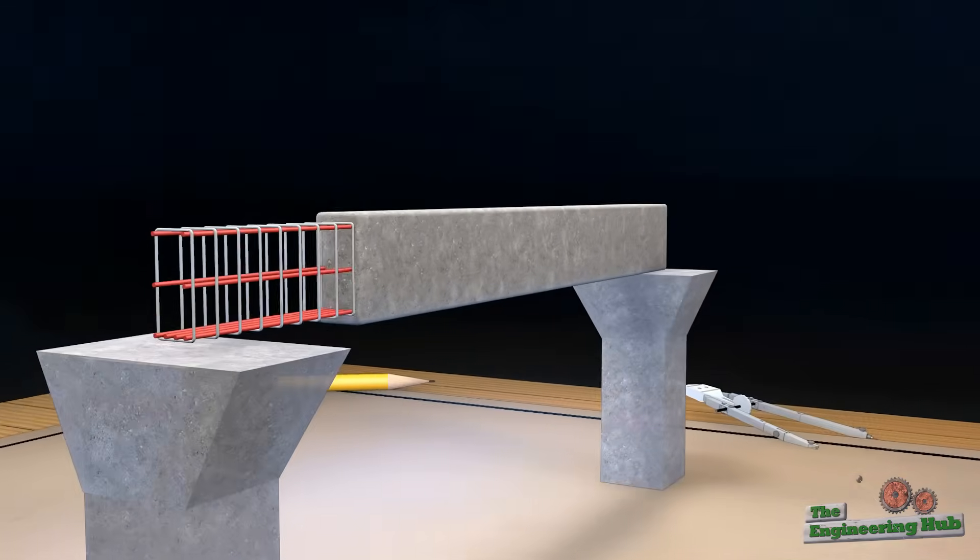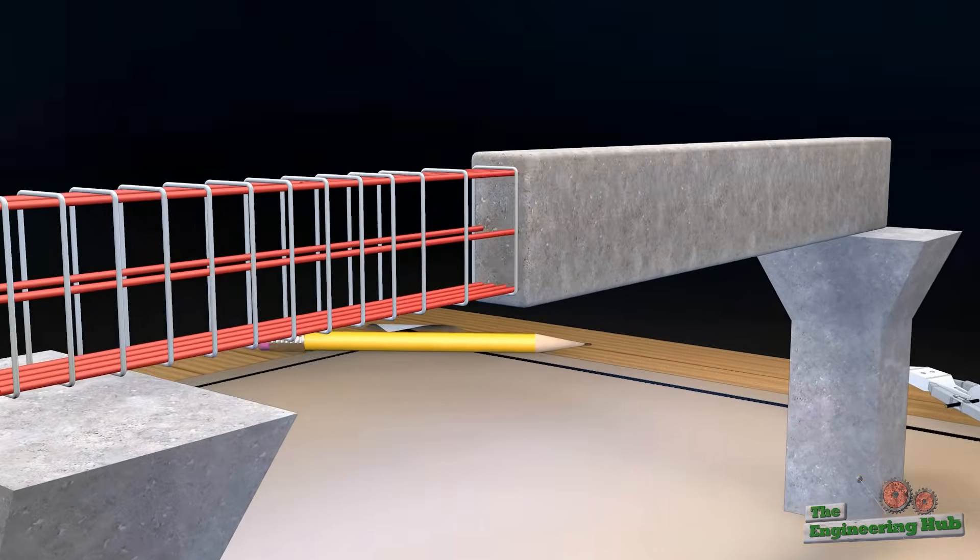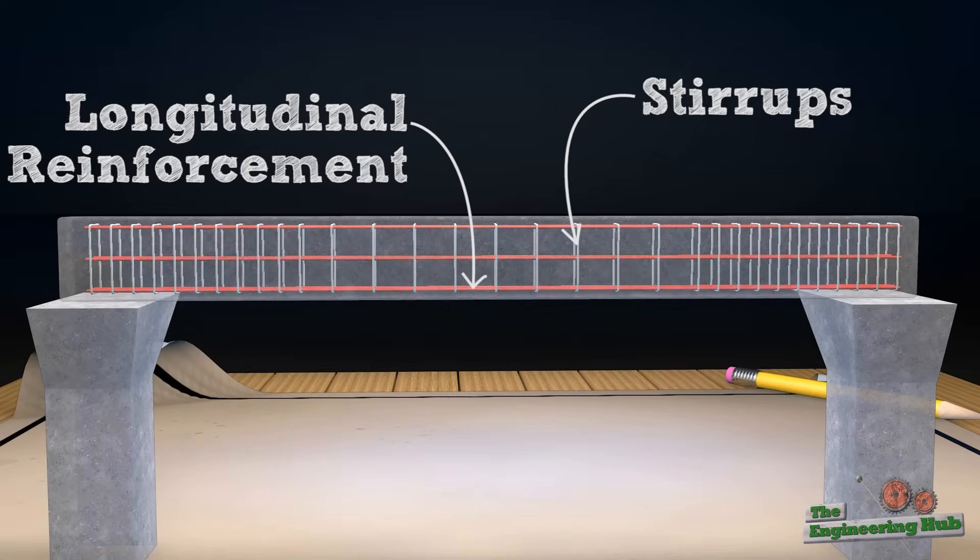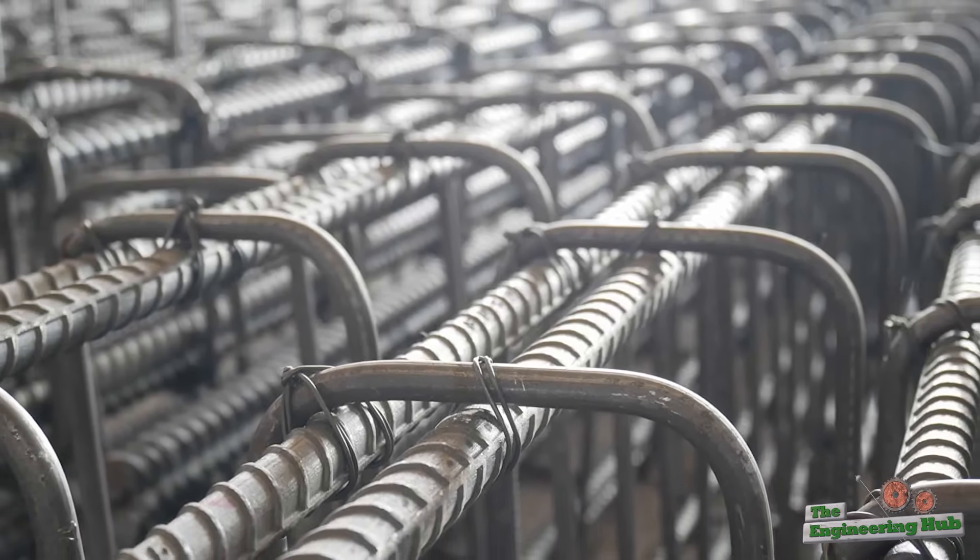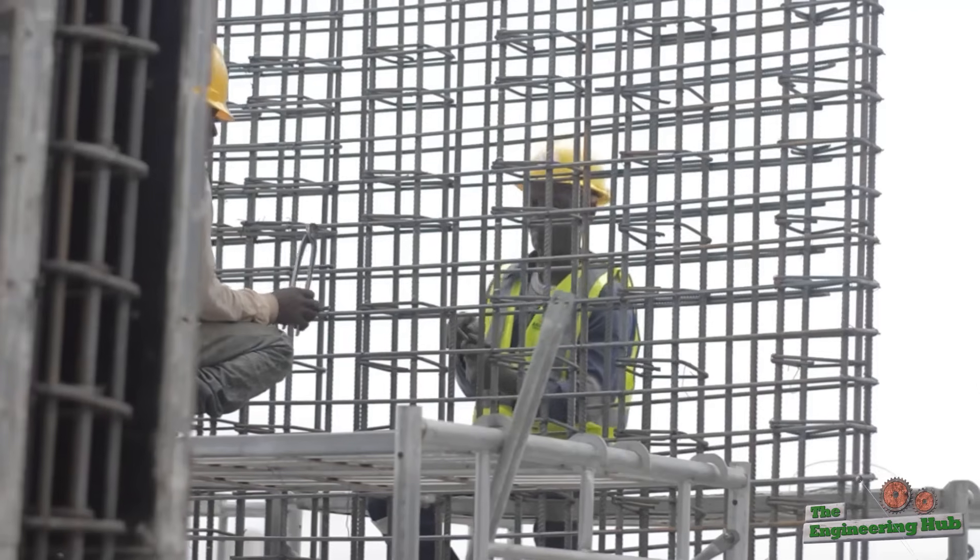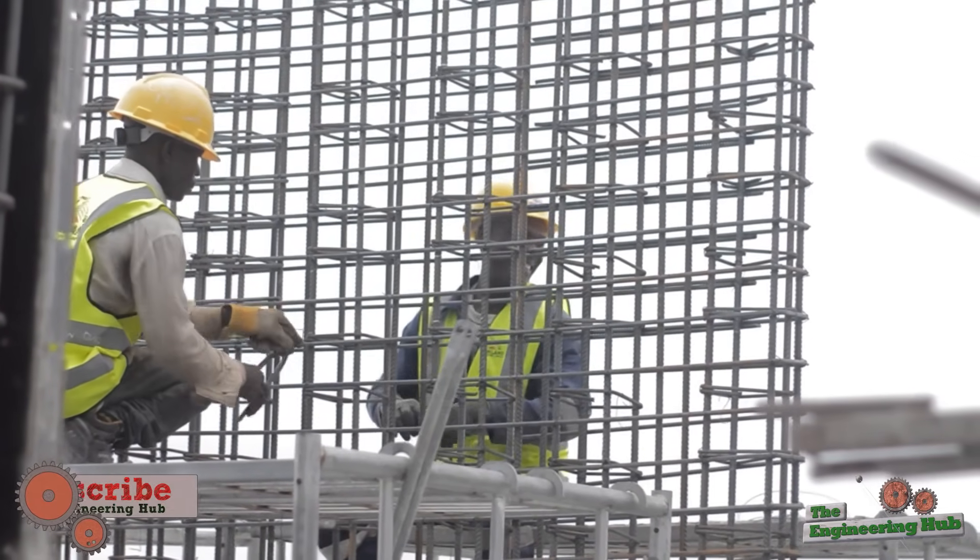But if longitudinal rebar takes tension on the bottom, and concrete takes compression on the top, then what is the purpose of the stirrups? Many people in construction believe that the stirrups are only there to hold the longitudinal reinforcement in place. Though that is true, it is not the main reason for their use.